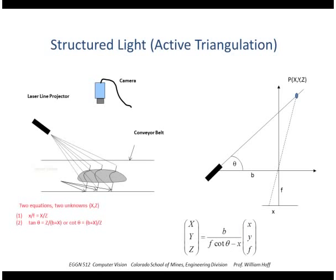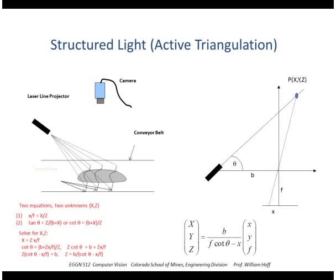You write down the standard perspective projection equation for the camera: x over f equals X over Z. You also write the equation relating the angle theta of the laser to the optical axis: tangent of theta equals Z over (b + x), or equivalently cotangent of theta. Solving those simultaneously gives the value of Z, and plugging that in gives X and Y as well.